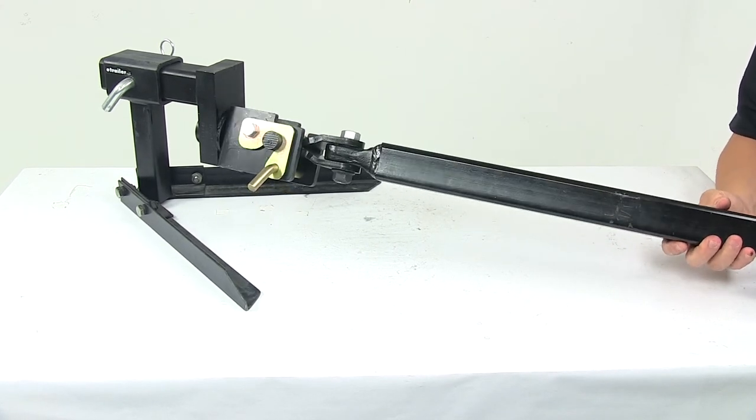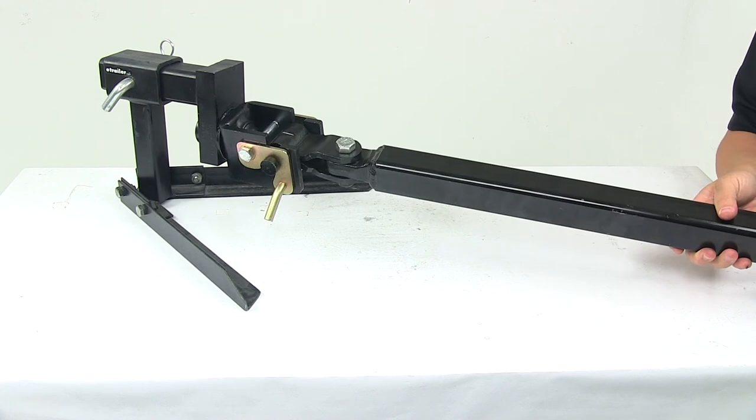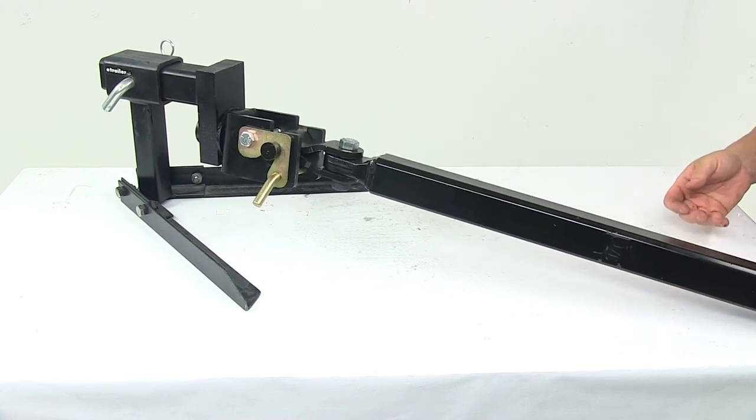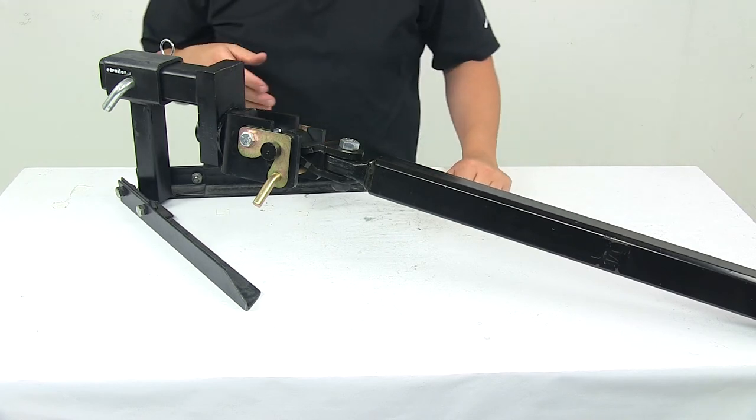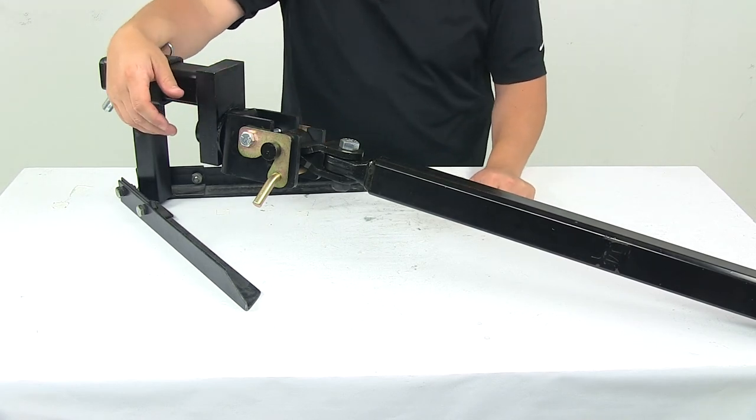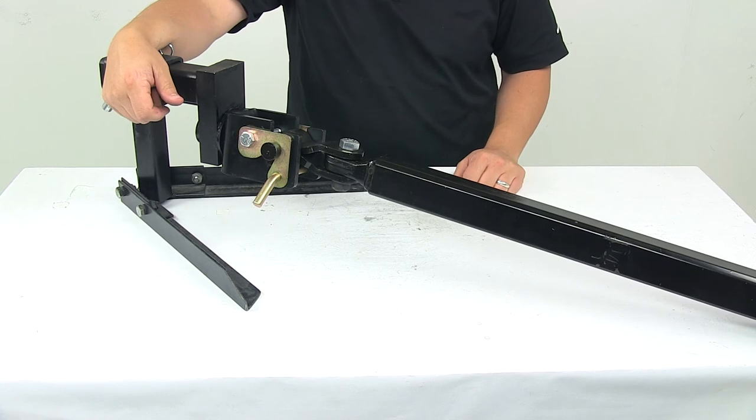And if we go over that uneven terrain, you can see how that portion swivels, which is going to reduce the amount of strain placed on the vehicle frame and the trailer frame. So it prevents twisting damage to the frames on the vehicle and the trailer. It's typically caused by sudden changes in vehicle trailer orientation.